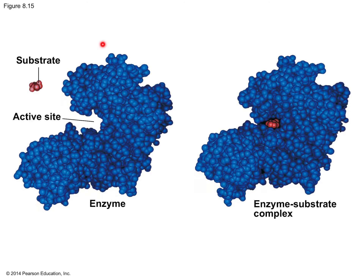Here we have a large enzyme molecule — this is a space-filling model showing all the individual atoms. Here's the active site: a three-dimensional location on the surface contour of that enzyme. Here's our substrate, which has a shape that allows it to fit into the active site. When it does, the active site closes around behind it, isolating that substrate from the external environment — that's the enzyme-substrate complex. This isolation is the induced fit. At that point, the substrate molecule is going to be converted into some sort of product through a chemical reaction.